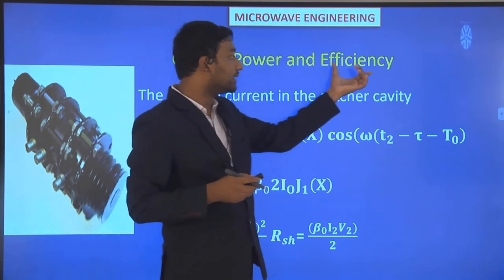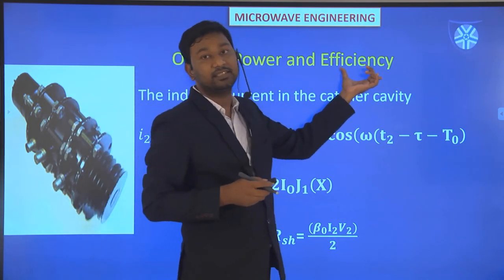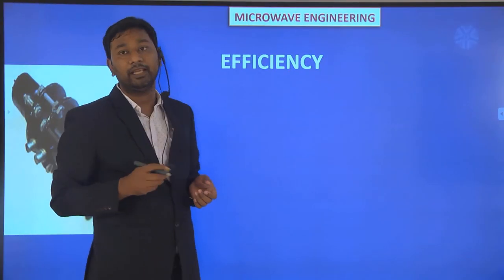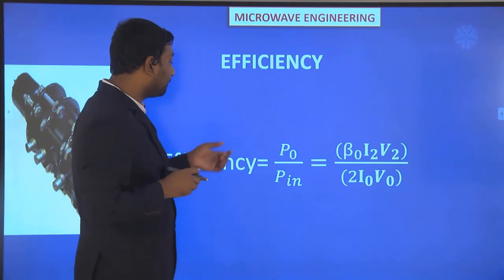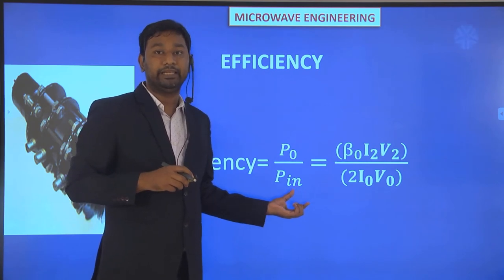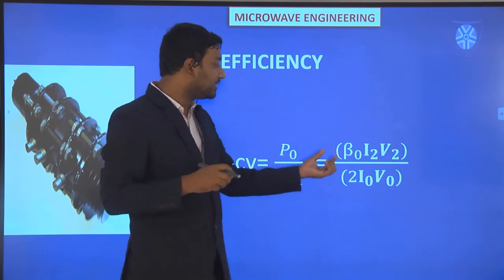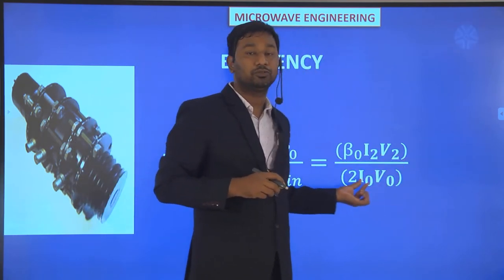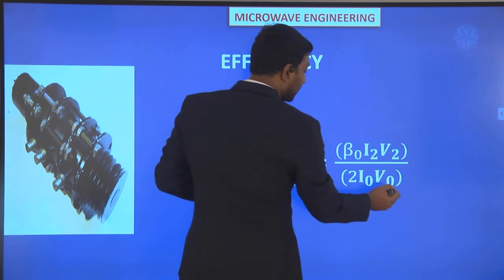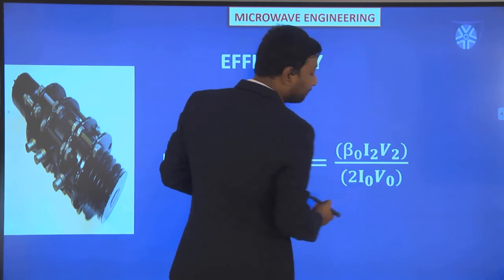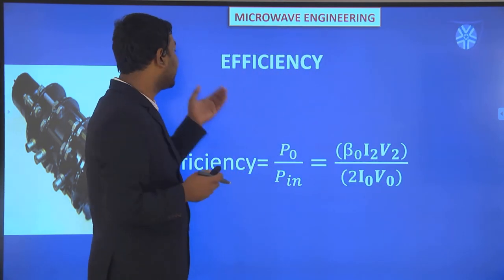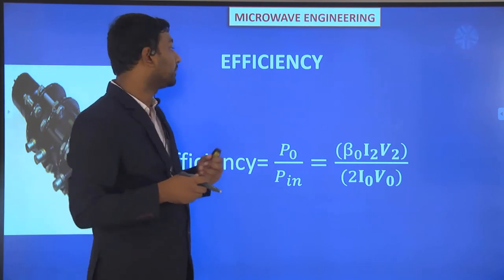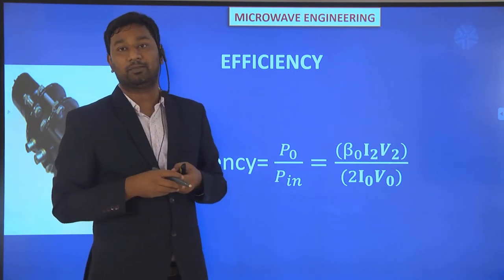Now for the efficiency: efficiency equals output power divided by input power, which is P0/Pin. P0 is I2²·R/2, and input power Pin equals I0·V0. From this equation we can calculate the efficiency of the two-cavity klystron amplifier.